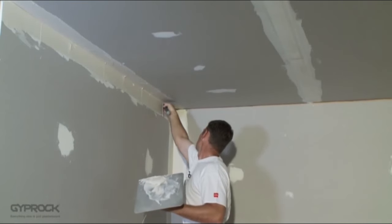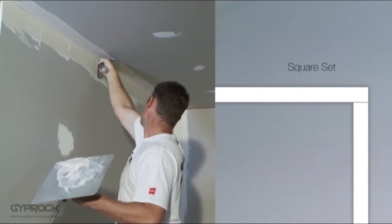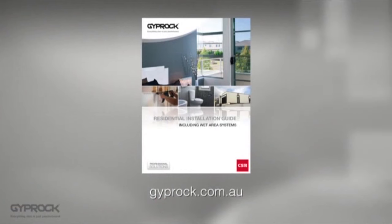If you've chosen to square set your ceiling instead of installing cornice and your plasterboard has been installed to suit, take a look at videos three and four and download the Gyproc residential installation guide from gyproc.com.au for full installation instructions.